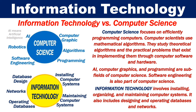What is the difference between information technology and computer science? Computer science focuses on efficiently programming computers. Computer scientists use mathematical algorithms and study theoretical algorithms and the practical problems that exist in implementing them through computer software and hardware. AI, computer graphics, and programming are subfields of computer science. Software engineering is also part of computer science.